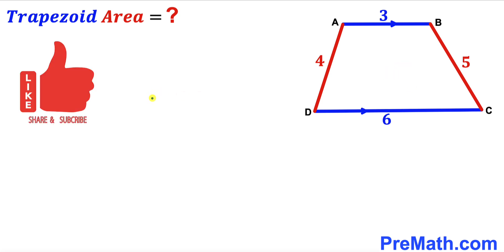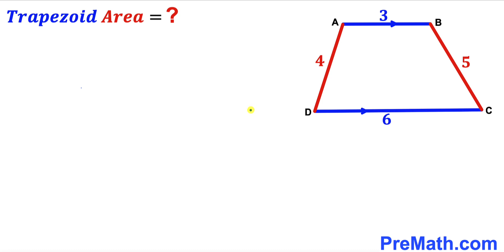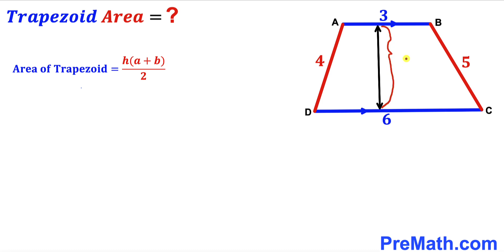Please don't forget to give a thumbs up and subscribe, and keep in mind that this figure may not be 100% true to scale. Let's get started. Since we are interested in calculating the area of trapezoid ABCD, let's recall the area of a trapezoid formula: Area equals height H times the sum of the bases A and B, all over 2. Here base A is 3 units and base B is 6 units, so our task is to calculate the height H.